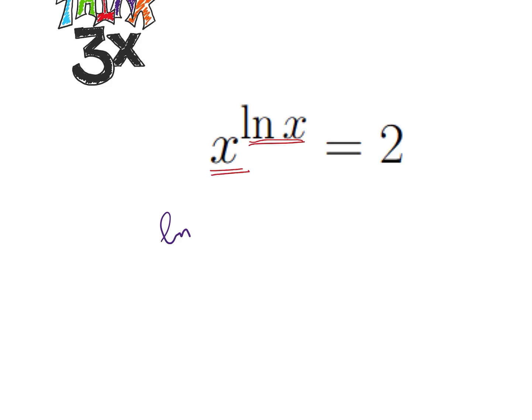And so we're going to take the natural log of x to the ln of x equals the natural log of 2. And x is restricted to positive numbers because we're taking ln of x, so no issue doing this here.